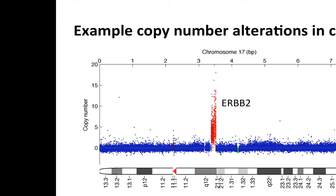What we did was create a pooled reference out of the 450 cases for which we had normal, then ran the tumor against that pooled reference. You can also download pooled references — for example, if you're using Affymetrix and don't have a matched normal, you can use these pooled references. HapMap did something like a thousand normal cases, giving you a reasonable pool of normals to work with.